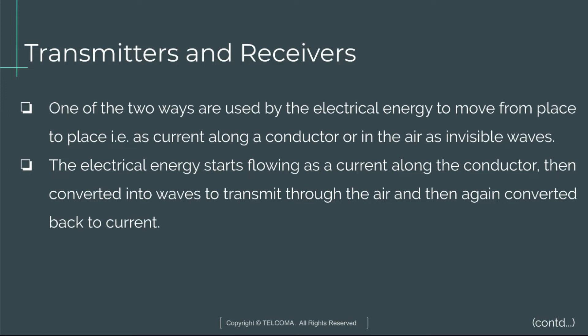One of the two ways electrical energy moves from one place to another is as current along a conductor, or in the air as invisible waves. The electrical energy starts flowing as a current along the conductor, then is converted into waves to transmit through the air, and then converted back to current after reception.